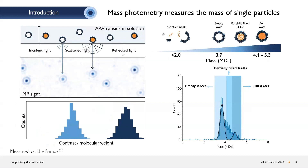Mass photometry is a technique that uses light scatter to measure the mass of single particles. On the left, we see an example of an AAV sample that contains both empty and full virus, shown with or without the orange DNA cargo. These particles land on the surface, register a light scattering signal that is then interpreted as a contrast value proportional to the mass of each particle, and counted as two populations in the histogram shown at the bottom.